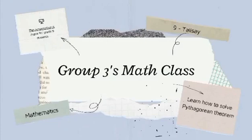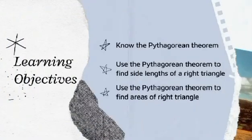Today, we're going to talk about the Pythagorean Theorem. Learning Objectives: Use the Pythagorean Theorem to find the side length of a right triangle. Use the Pythagorean Theorem to find the areas of a right triangle.